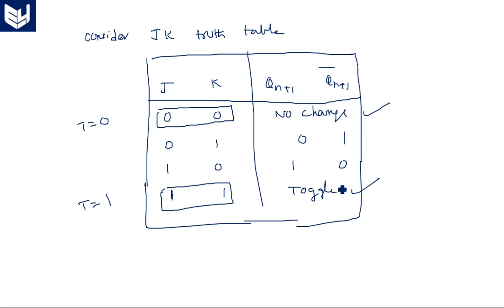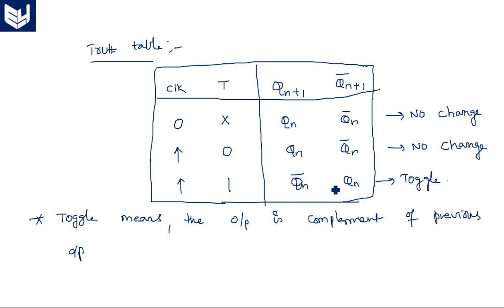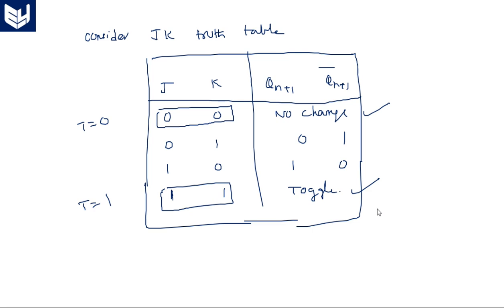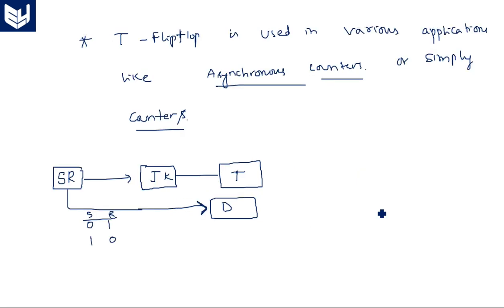The toggle state is the complemented version of the previous state. In the T flip-flop truth table: when clock is zero, irrespective of the input, output is no change. When clock has a rising edge and T equals zero, output is no change because T=0 gives J=0 and K=0. When clock has a rising edge and T equals one, we get the toggle state — a complement of the previous output. The main application of the T flip-flop is in counters.